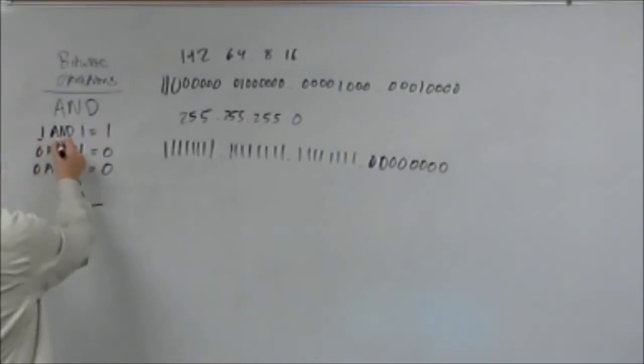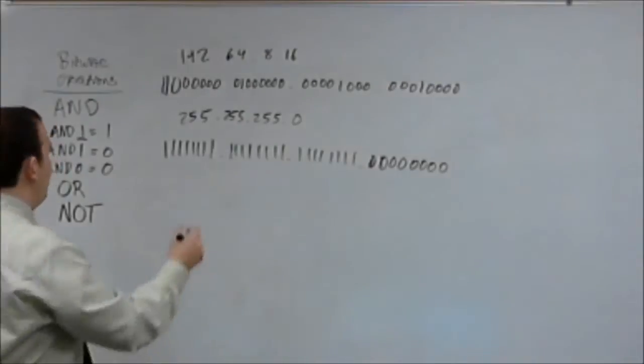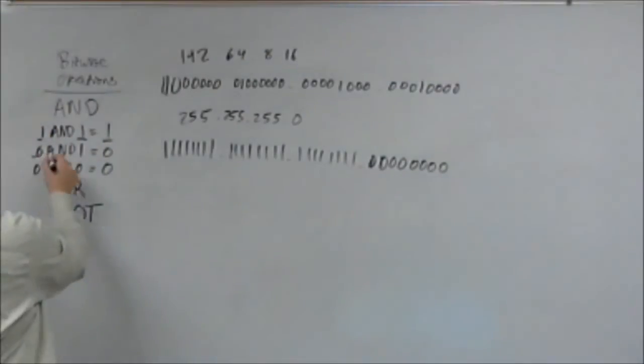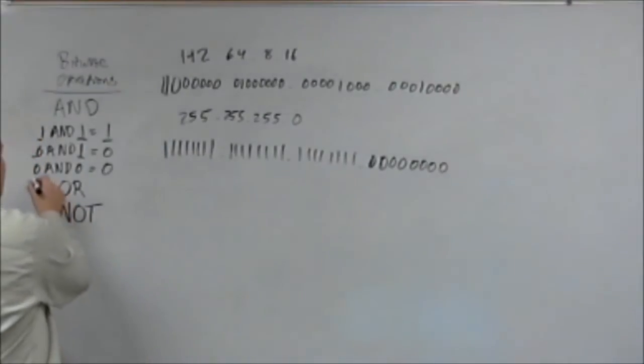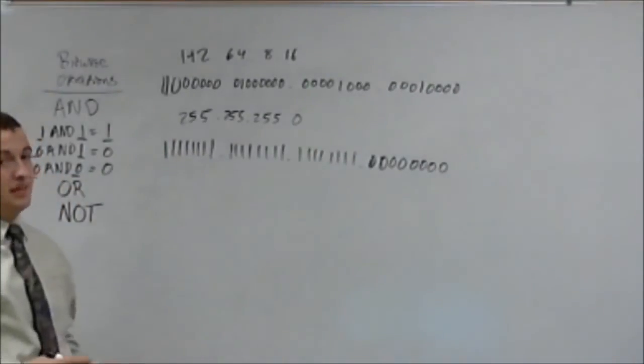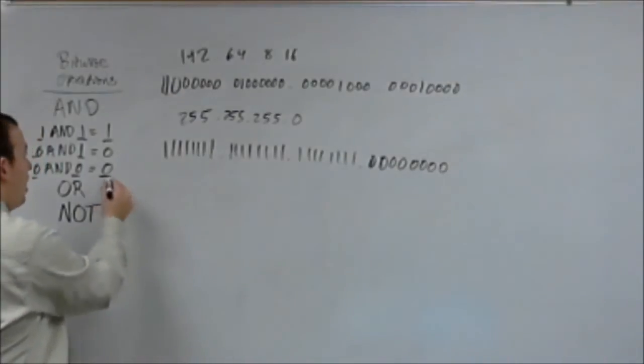So, right here, the one and the one match up, so you get a one, because that's what the value is. Right here, the zero and the one do not match up, so it's an off. Right here, the off and the off do match up, because it was all off, but because it was already off, it stays off.